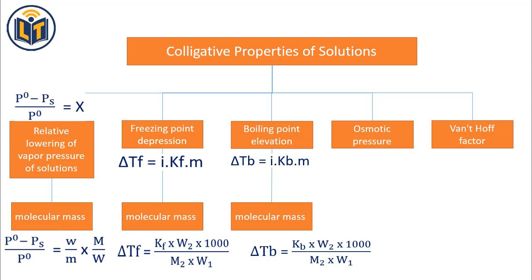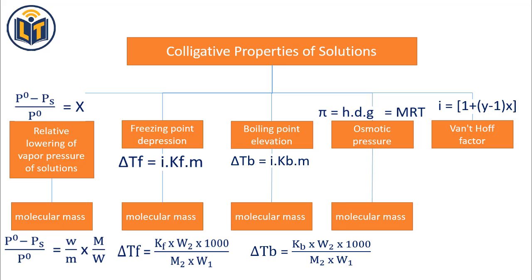Next is osmotic pressure. It is the minimum pressure required to be applied to a solution to stop the inward flow of water across a semi-permeable membrane. Its formula is π = HDG = MRT. Last one is the Van't Hoff factor I. It is a factor used to check if a compound dissociates or associates in a solution. If I is greater than 1, solute dissociates. If I is less than 1, solute associates. And if I is equal to 1, solute neither dissociates nor associates.